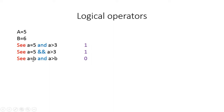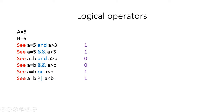The 'or' operator returns 1 if either condition is true. If 'a=b' is false but 'a<b' is true, the result is 1. You can use '||' (double pipes) instead of 'or'. The 'not' operator reverses the result — 'not (a=b)' turns false (0) into true (1). You can also use '!' instead of 'not'.